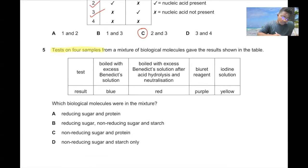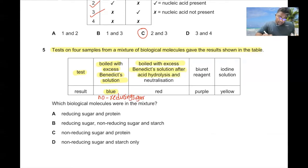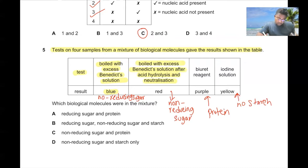Question number five. Tests on four samples of a mixture of biological molecules give the results shown in the table. Benedict's solution gave a blue colour — no reducing sugar. After acid hydrolysis and neutralization, the solution turned red — non-reducing sugar present. Biuret reagent gave purple — protein present. Iodine solution gave yellow — no starch. So the mixture had non-reducing sugar and protein. C is the correct answer.